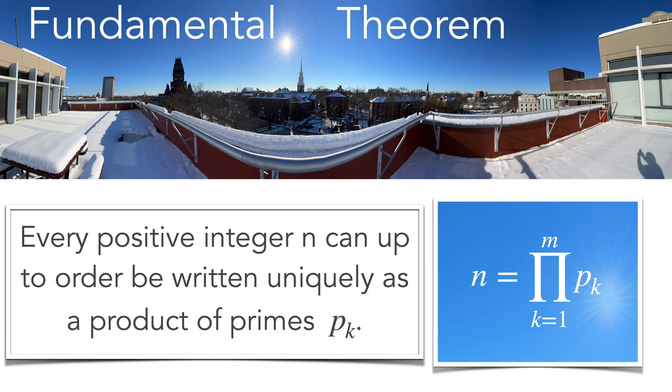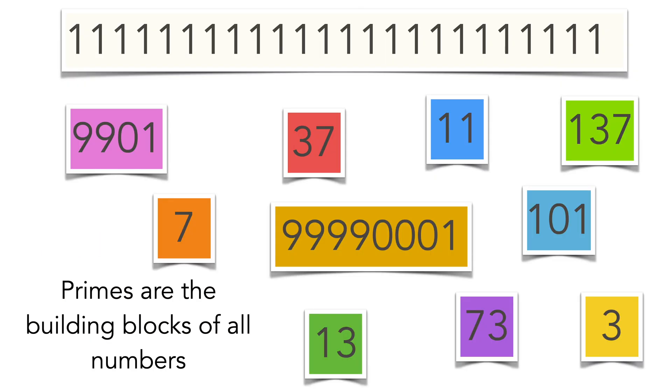The first theorem is the fundamental theorem of arithmetic. It tells that every integer has a unique prime factorization, unique up to the order of the factors. Like here we have a repeated unit integer at the top and it decays into primes. Primes are the building blocks of all numbers.